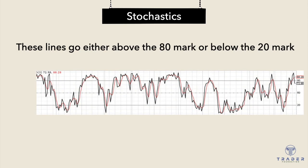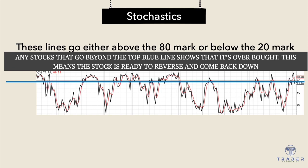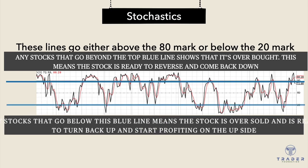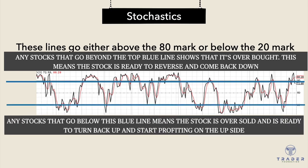These lines go either above the 80 mark or below the 20 mark. Any stocks that go beyond the top blue line shows that it's overbought. This means that the stock is ready to reverse and come back down. Any stocks that go below this blue line means the stock is oversold and is ready to turn back up and start profiting on the upside.